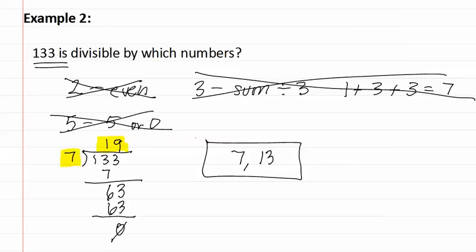In conclusion, use divisibility tests to determine which numbers can go into the number you are trying to find. For two, the last digit must be even. For three, the sum of the digits must divide by three. For five, it must end in a five or a zero. And for all prime numbers seven and larger, use long division.